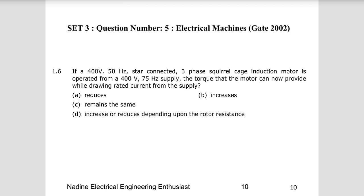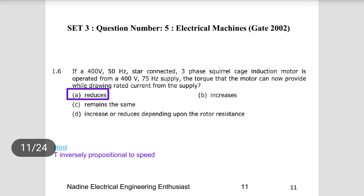Fifth question: if a 400V, 50 Hz star-connected three-phase induction motor is operated from a 400V, 75 Hz supply, what torque can the motor provide while drawing rated current? Increasing the frequency increases the speed of operation. Since torque and speed are inversely proportional, increasing frequency increases speed, so torque will reduce. Choice A is the right answer — the torque reduces because torque is inversely proportional to the speed of the motor.